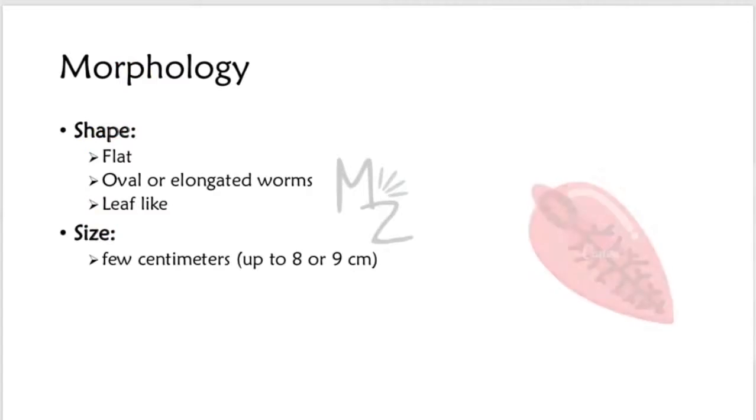Morphology. The shape of trematodes is flat, as you can see there. They are oval or elongated worms and leaf-like.